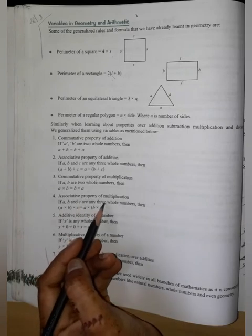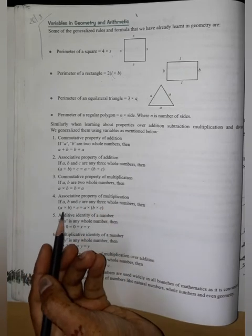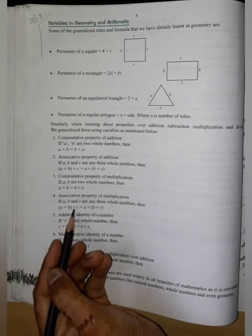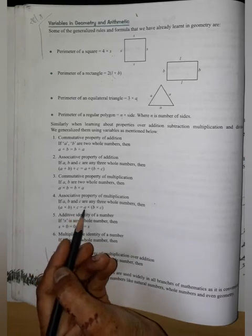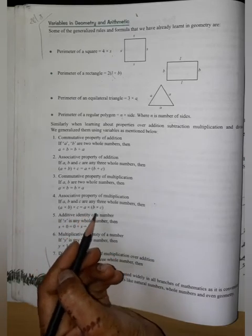Associative property of multiplication: A into bracket B into C is equal to bracket A into B into C.